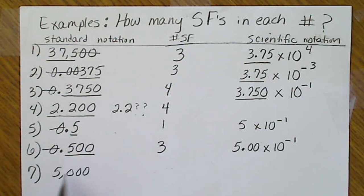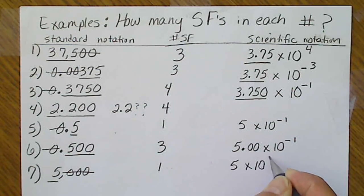Here, 5,000. 5,000 does not have a decimal, so those zeros, again, are just placeholders. This is an estimation. We've got one significant figure, and this is 5 times 10 to the third.